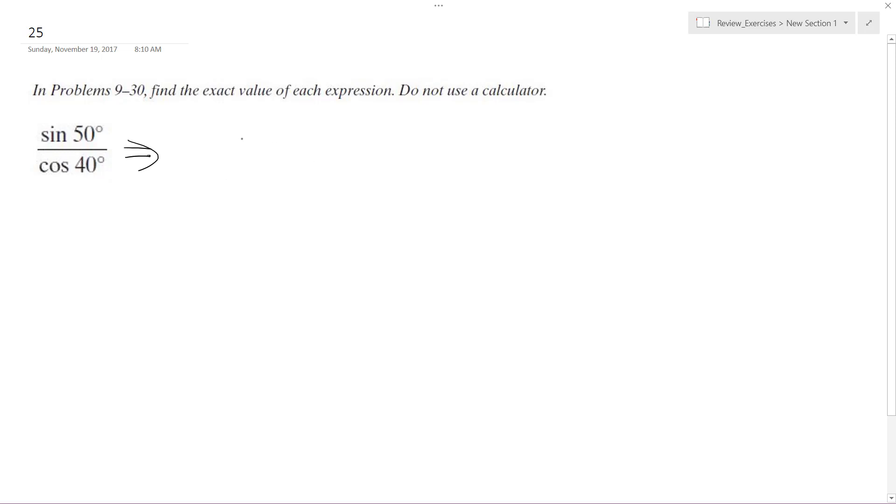because a property, a trig property is something like the sine of theta minus pi, I think it is, is equal to, like, the cosine... theta minus pi over 2, or no, I'll get there. Pi over 2 minus theta is equal to the cosine of theta.